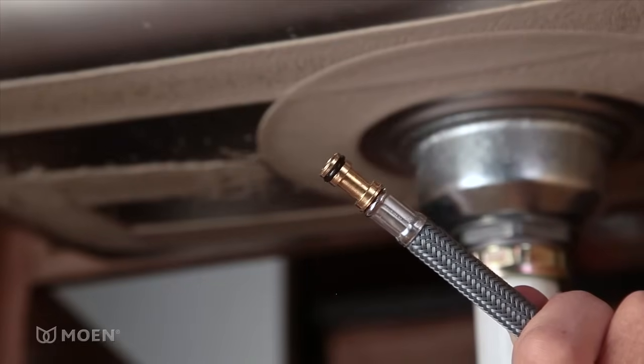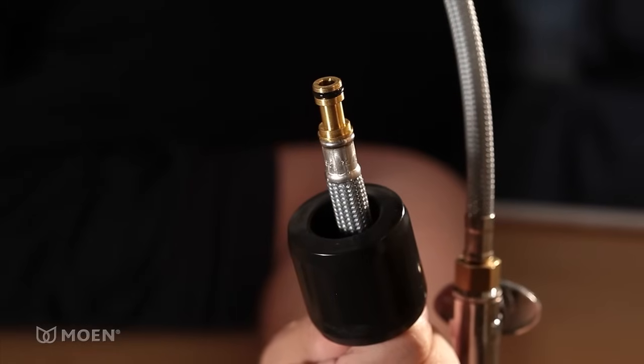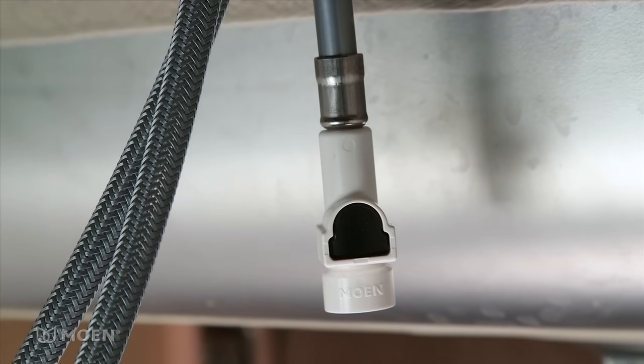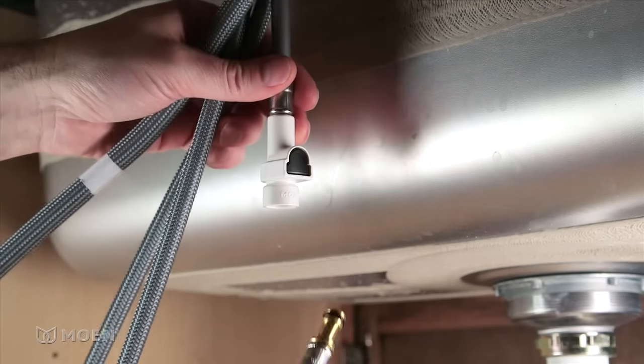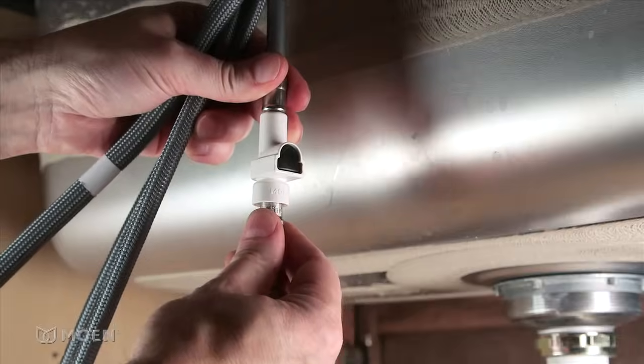Remove the protective cap on the end of the hose. Then slide on the doughnut shaped weight. Connect the pull-out hose to the faucet with our innovative Duralock quick connect system. Simply insert the hose into the connector. An audible click indicates a secure connection.